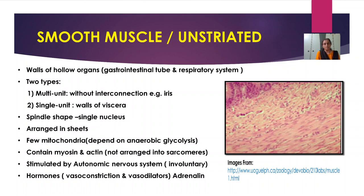The third type of muscle is smooth muscles, or unstriated muscles. No bands are seen, hence they are called smooth muscles. Smooth muscles are present in the walls of hollow organs such as the gastrointestinal tube and respiratory system. They are of two types: multi-unit, without interconnection — for example, the iris — and single-unit, in the walls of viscera. Smooth muscles are spindle shaped with a single nucleus, unlike skeletal and cardiac muscles, which are multi-nucleated.